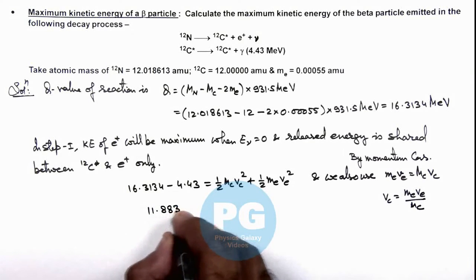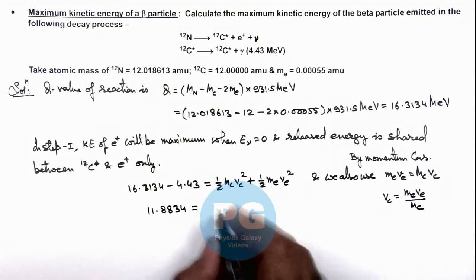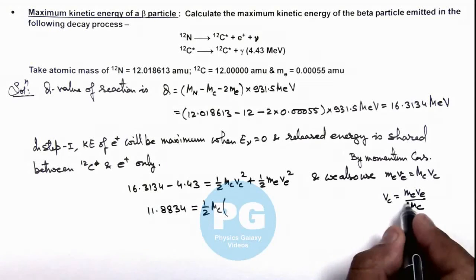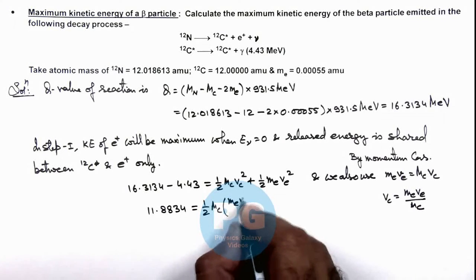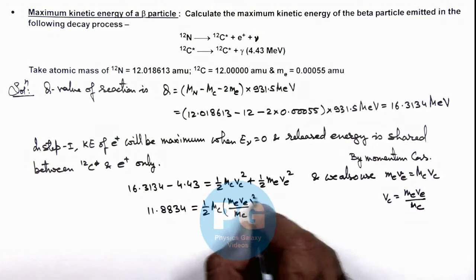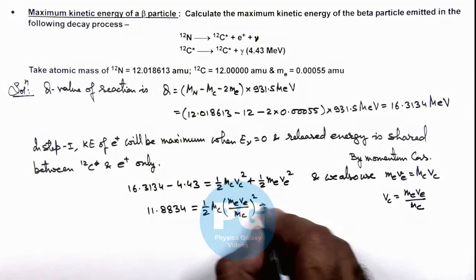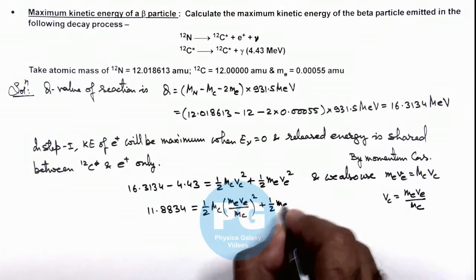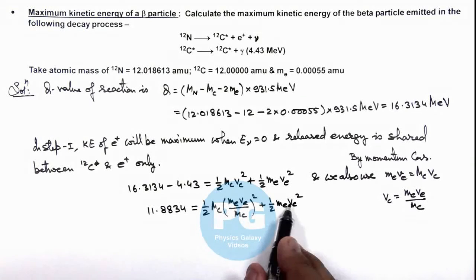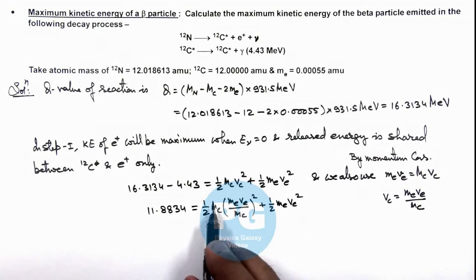This equals ½mc multiplied by vc, substituting meve over mc whole squared, plus ½meve². From these two terms, ½meve² we can take common and can be written as kinetic energy of electron.